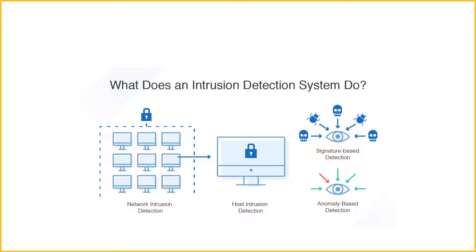While this approach can detect novel or zero-day threats, the difficulty of building an accurate model of normal behavior means that this system must balance false positives, i.e., incorrect alerts, with false negatives, i.e., missed detections.